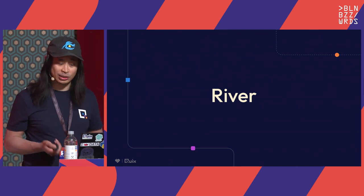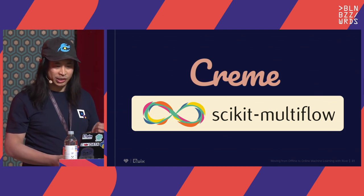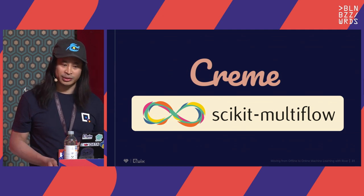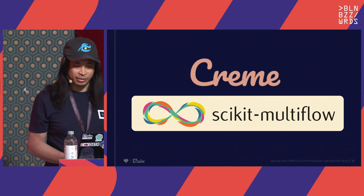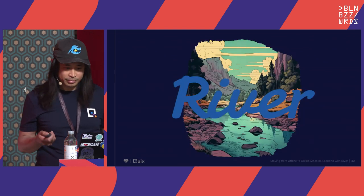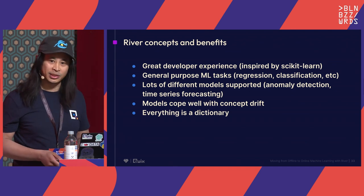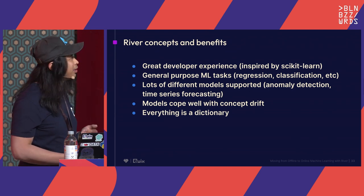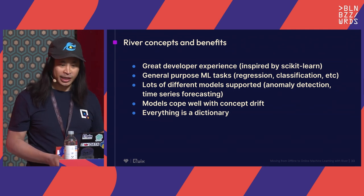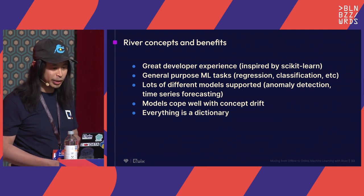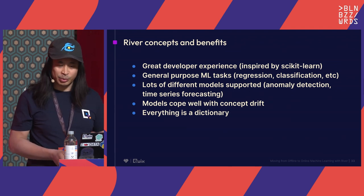My last few slides are about River. Before River, there were two projects: Creme, which had the mission of providing pure online machine learning models, and Scikit Multiflow, which dealt with online machine learning models plus some offline ones. The project leads got together, merged, and River was born. They focused on great developer experience and were heavily inspired by Scikit-learn. It's great for general purpose ML tasks like regression, classification, and unsupervised learning, and for ad hoc tasks like calculating rolling metrics, as well as anomaly detection and time series forecasting.